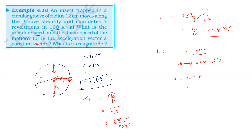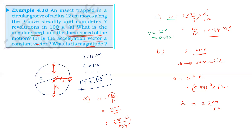Omega is 0.44, so omega squared into radius 12 cm gives a centripetal acceleration magnitude of 2.3 cm per second squared. The linear speed equals omega into r. With omega = 0.44 radians per second and r = 12 cm, the linear velocity is 5.3 centimeters per second. Angular speed: 0.44 radians per second. Acceleration magnitude: 2.3 cm per second squared.